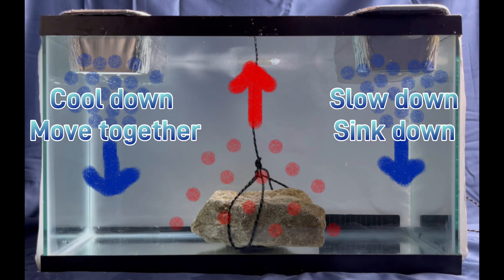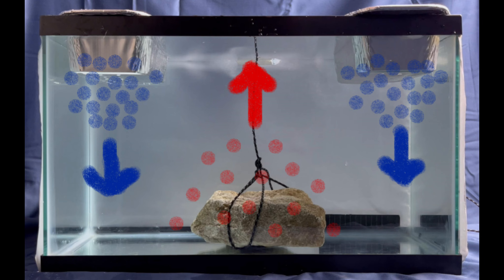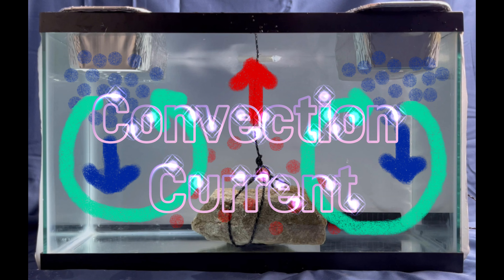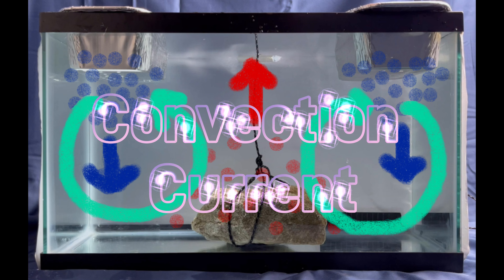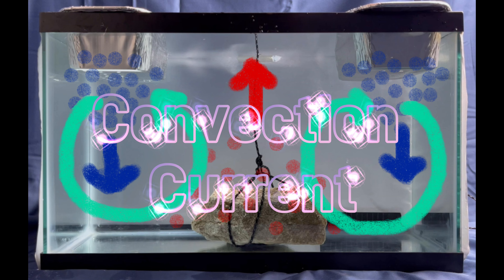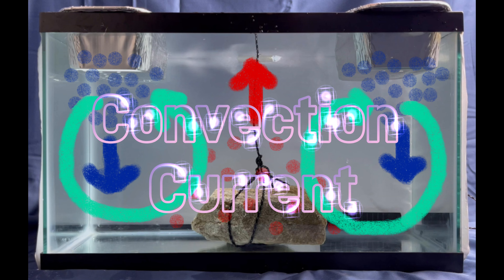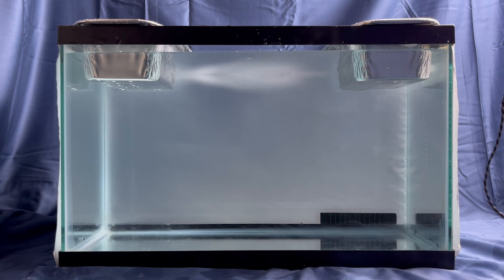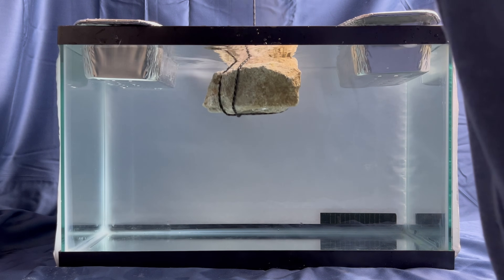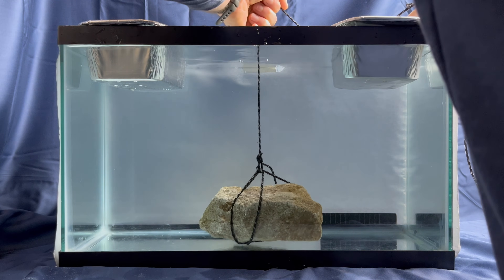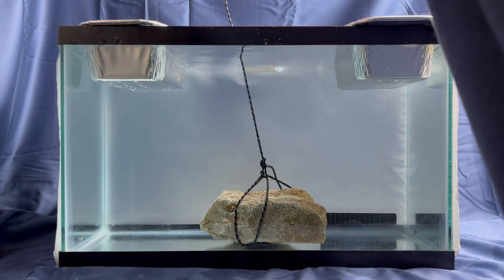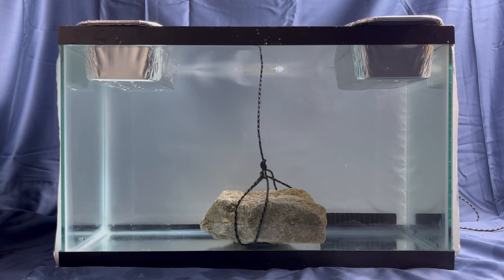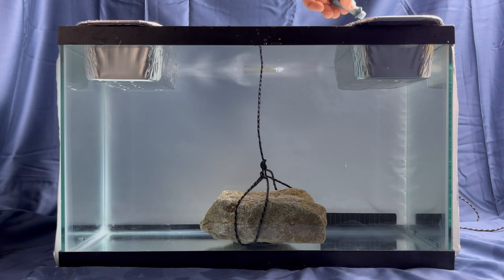The effect of all of this motion is the creation of what we call a convection current: warmer, less dense molecules rising; colder, more dense molecules falling; and a sort of circular pattern developing in our tank. Let me show you how we can make this process visible — by adding food coloring to the water, we can actually track the movement of the convection current in this fish tank.